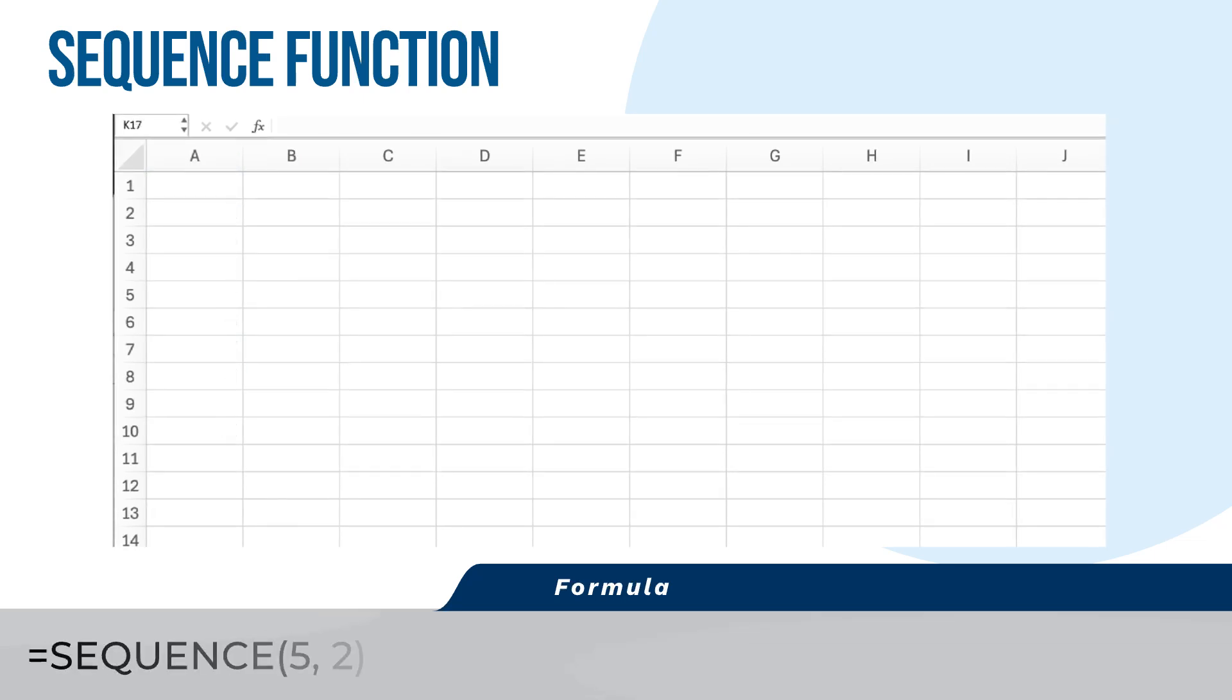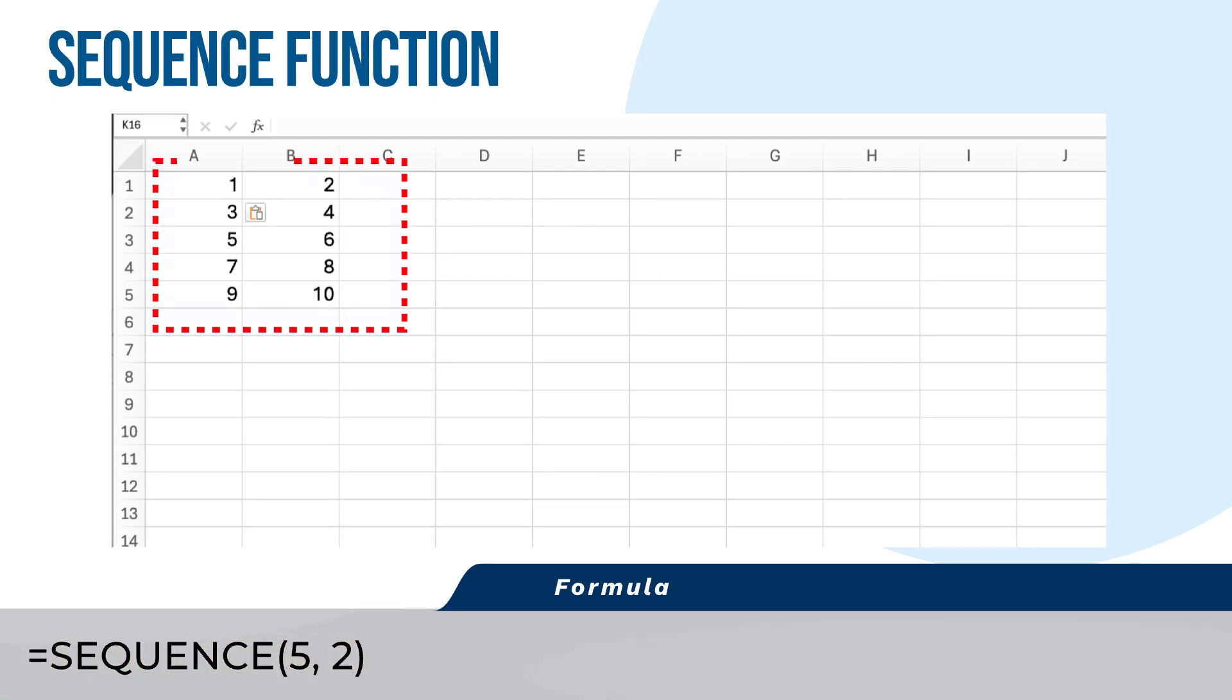Generating a sequence across multiple columns. Select the cell where you want the sequence to begin. Enter the formula equals Sequence 5, 2 and press Enter. The result will be a 5 by 2 array of sequential numbers from 1 to 10.